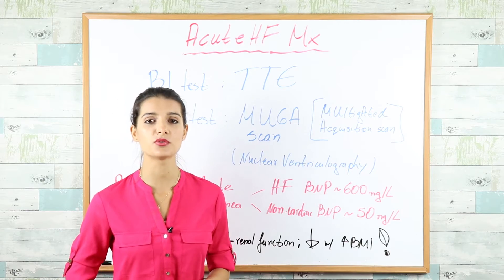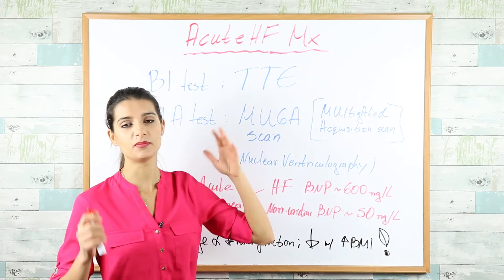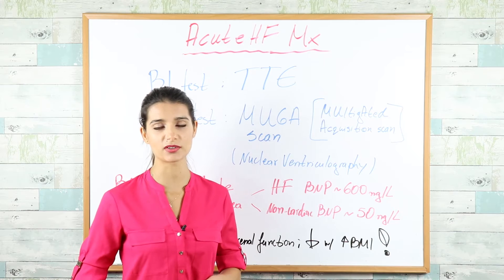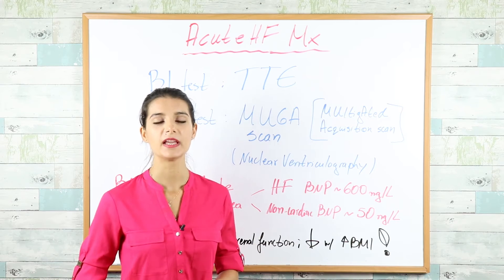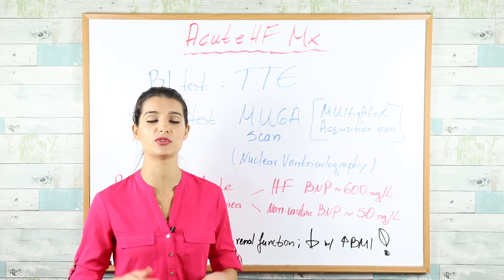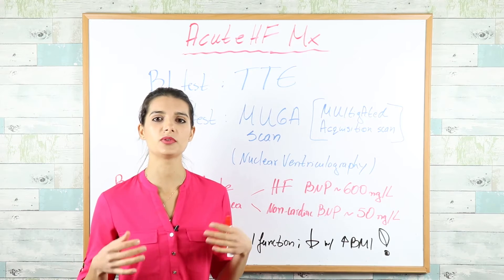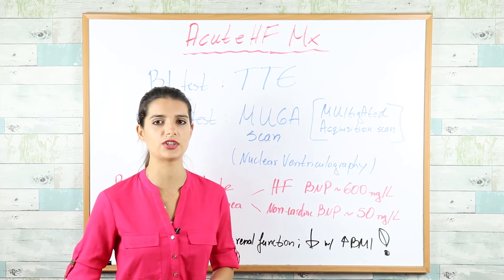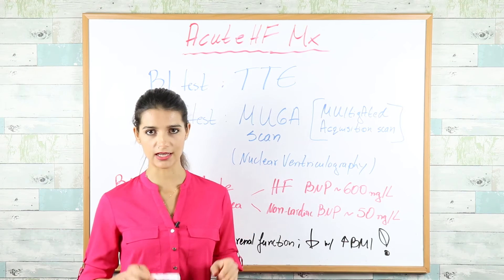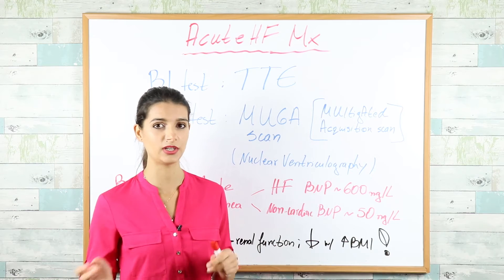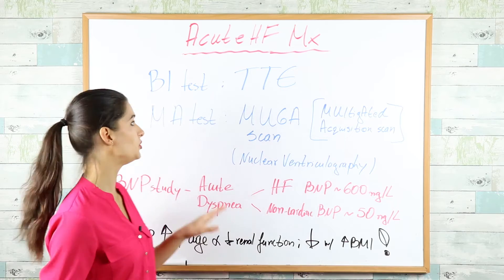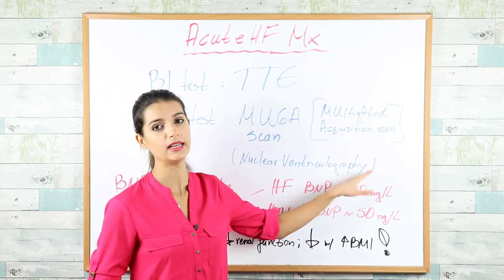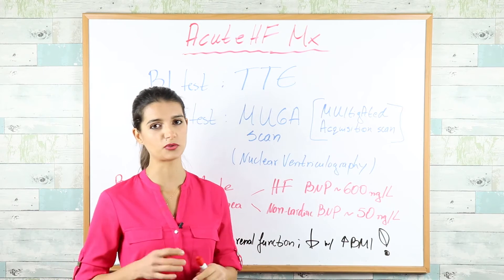Once the patient is stabilized, perform transthoracic echocardiography (TTE) — the best initial test to differentiate systolic from diastolic heart failure. EF of 55% or above = HFpEF (diastolic); below 55% = HFrEF (systolic). If asked about the most accurate test, it's the MUGA scan — multigated acquisition scan, also called nuclear ventriculography — though not commonly done in clinical practice.